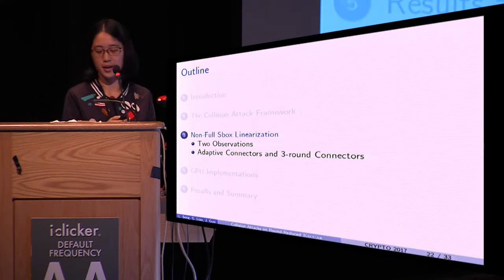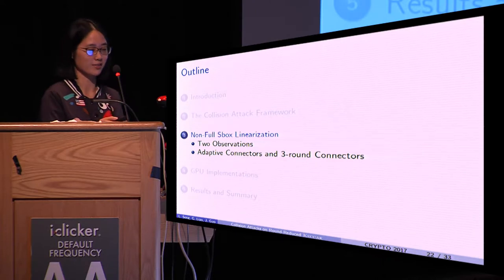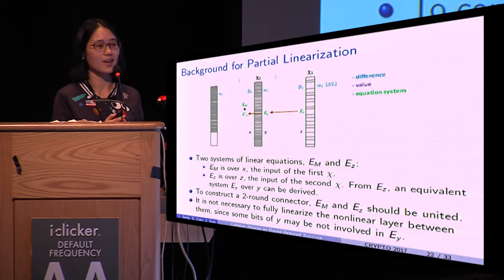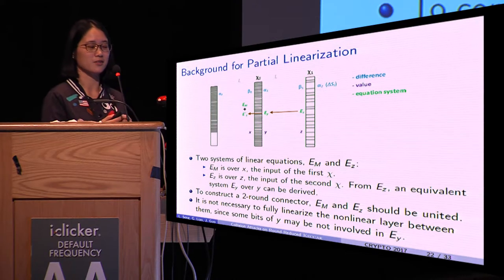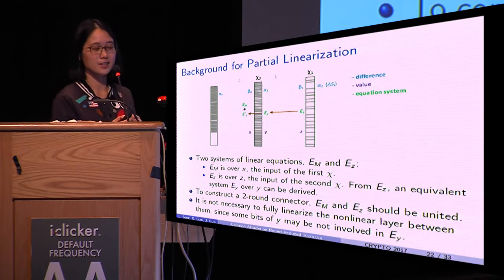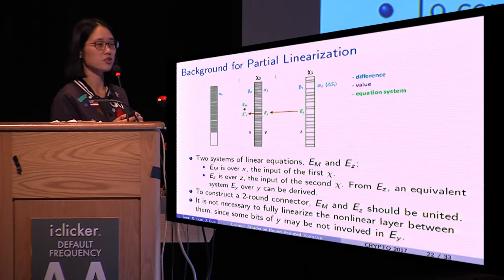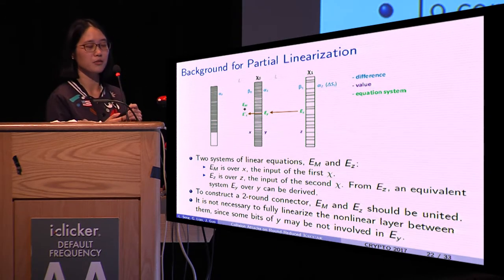Part three: non-full S-box linearization. In the construction of two-round connectors, once the differences α_i and β_i are fixed, an equation system over the input value of chi can be constructed.